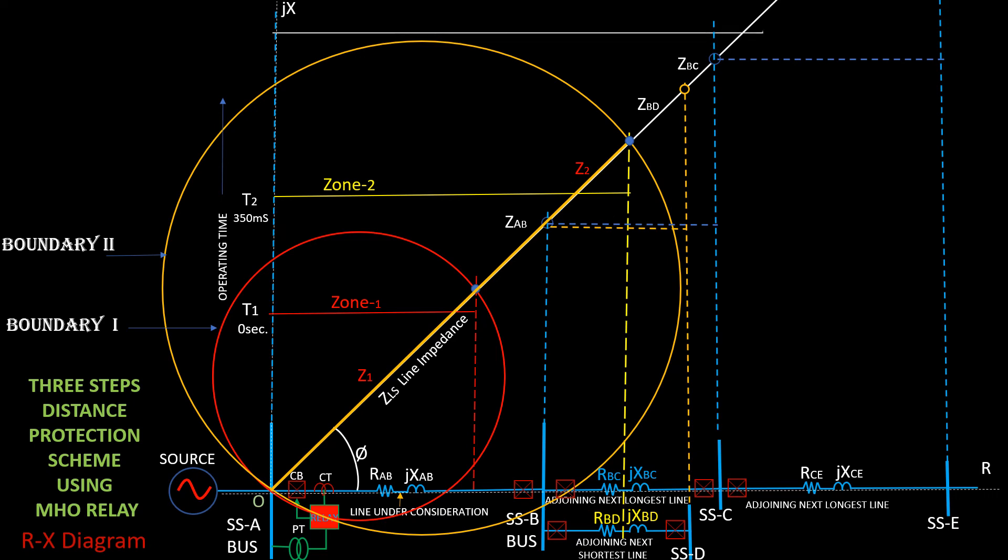Zone 3 protects 100% of the line between substation A and substation B plus 100% of the line between substation B and substation C plus 20% of next adjoining line.